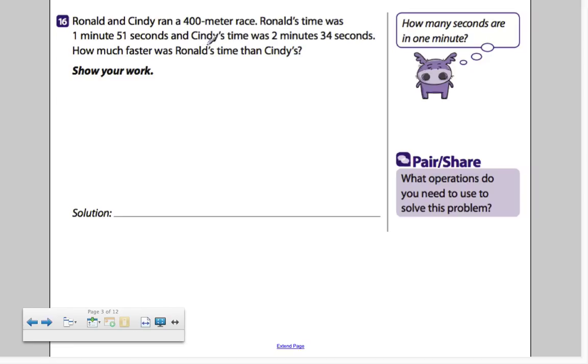Ronald and Cindy ran a 400 meter race. Ronald's time was one minute and 51 seconds. Cindy's time was two minutes and 34 seconds. How much faster was Ronald's time? Oh my goodness. Tricky. Guess what this 400 is for? Nothing. All they want to know was who was faster. And you have to just look at the times for that. This 400 is unnecessary information. It's put in there to try to trick you or confuse you. What they want you to do is they want you to subtract one time from the other time.